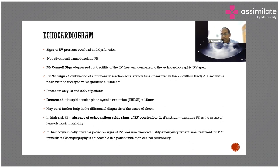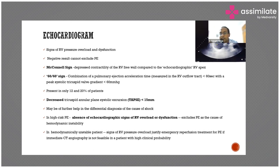The second sign is the 60-60 sign: the pulmonary ejection acceleration time is less than 60 milliseconds, along with peak systolic tricuspid valve gradient less than 60 mmHg. The 60-60 sign is also very specific for pulmonary embolism. Additionally, TAPSE — tricuspid annular plane systolic excursion — is decreased. If TAPSE is less than 15 mm, it indicates RV dysfunction.